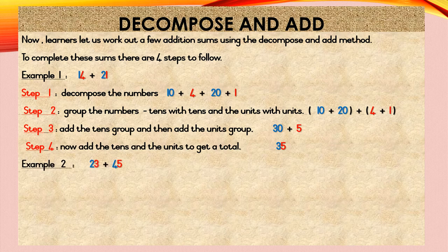Example 2: 23 plus 45. Step 1: Decompose the numbers. 23 when decomposed into tens and units will be 20 plus 3. 45 when decomposed into tens and units will be 40 plus 5. So step 1 will read 20 plus 3 plus 40 plus 5.